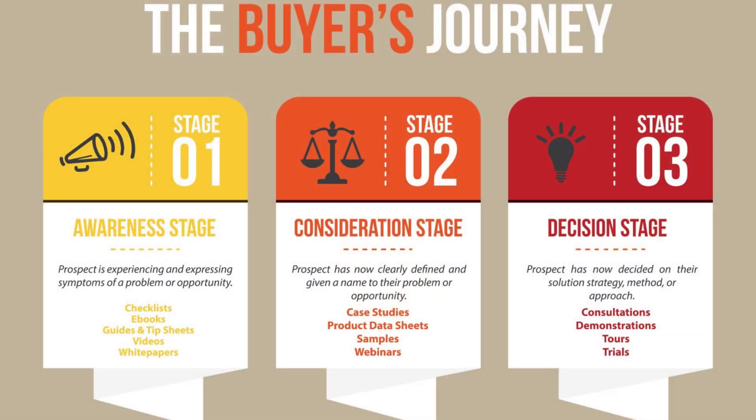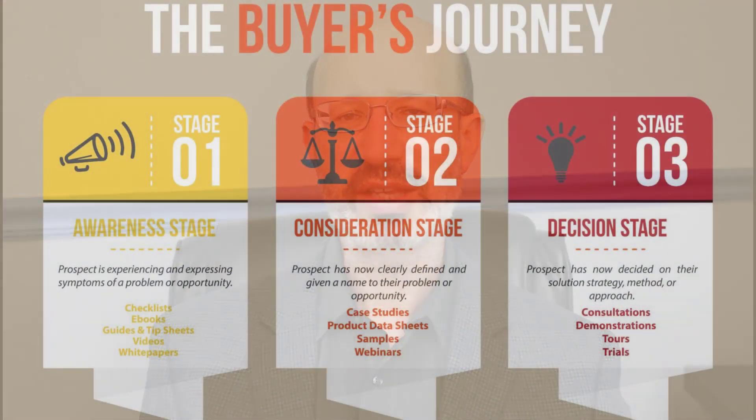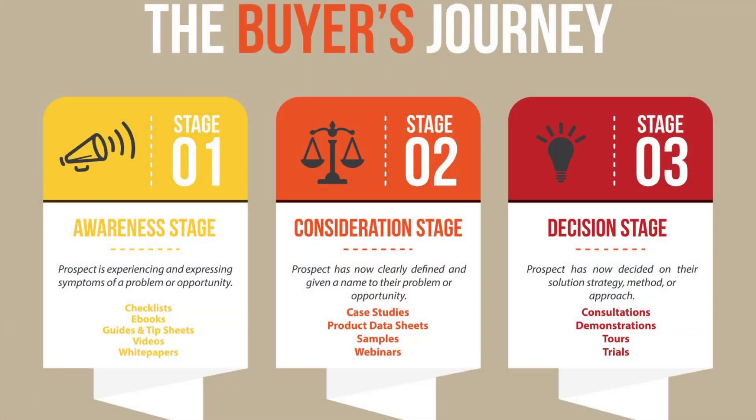Since it can sometimes be confusing, let's clarify that lifecycle stage actually differs from buyer's journey stage. The buyer's journey is the active research process that a person goes through between when that person identifies a problem to solve, a goal to achieve, or a question to answer, and when that person ultimately makes a purchase decision. The buyer's journey consists of three stages: awareness, consideration, and decision.